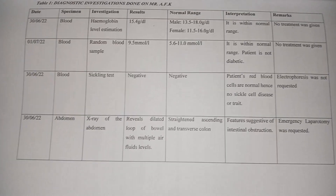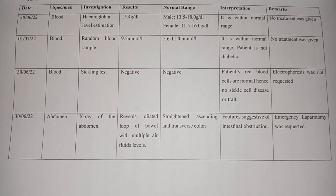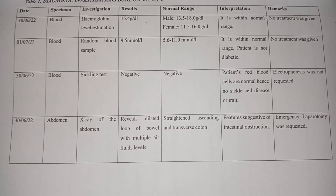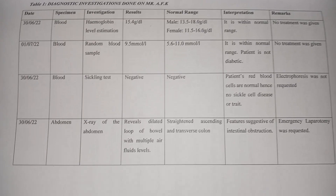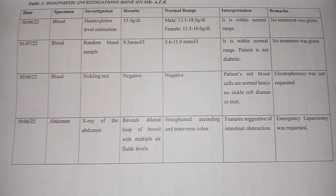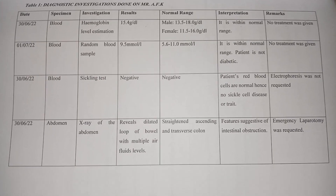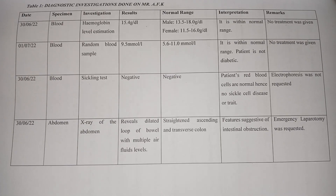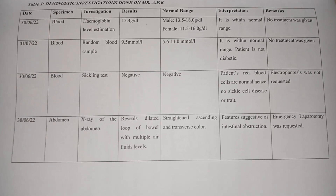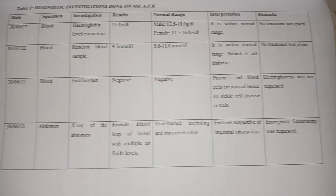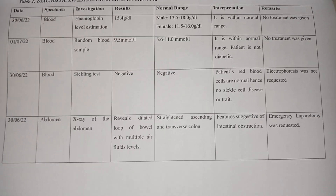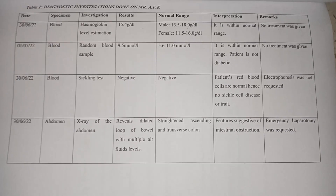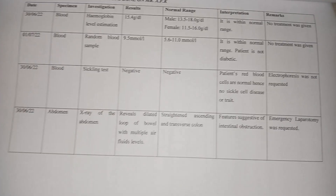After interpretation, you add a remarks column indicating what intervention was done. For example, if hemoglobin is normal, no treatment was given. For the abdominal X-ray, the investigation revealed a dilated loop of bowel with multiple air-fluid levels. The normal expected finding would be a straightened ascending and transverse colon. The features were suggestive of intestinal obstruction, and the remark was that an emergency laparotomy was performed.